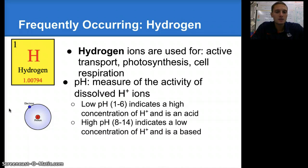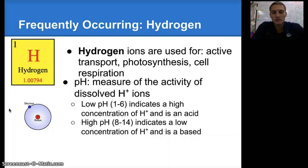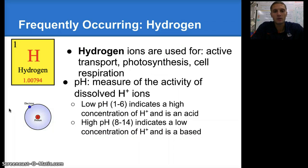A high pH from 8 to 14 indicates a low concentration of hydrogen ions, and we consider that a base. A pH of 7 is neutral. Most water is a pH of 7. Tap water is usually around 7.1 or 7.2, and pH can really affect how organisms live.